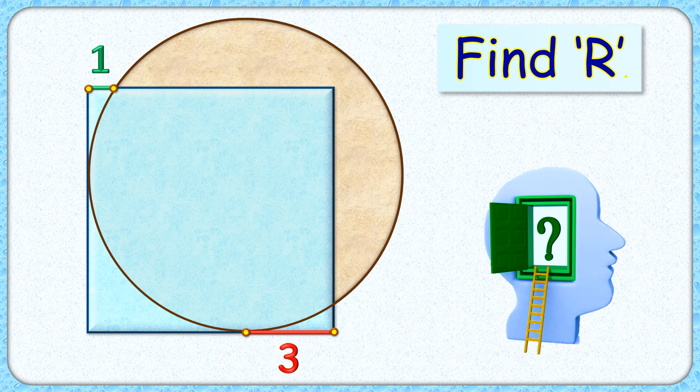Welcome everyone. This interesting question given to us is a square and a circle. The circle is tangent to the square sides at two of the points. Given is the length of this green line segment is one centimeter and this red line segment is three centimeters. The exciting part is with this limited data we have to find the radius of this circle.